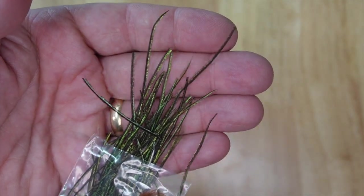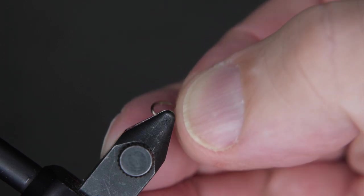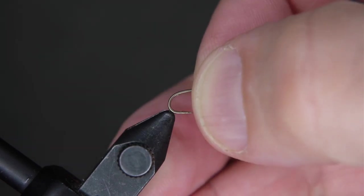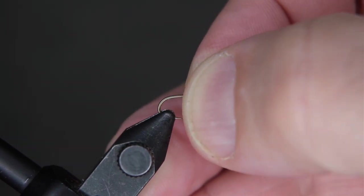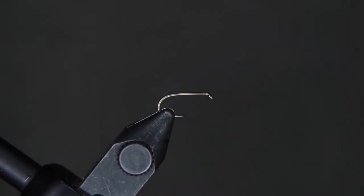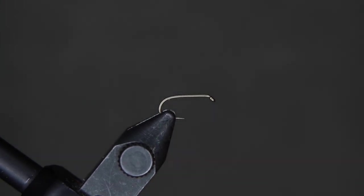Once you're ready, let's get our hook, the barb pinched on our hook and firmly placed in our vise. Like that, and once it's here, we're going to then tie on with our thread.